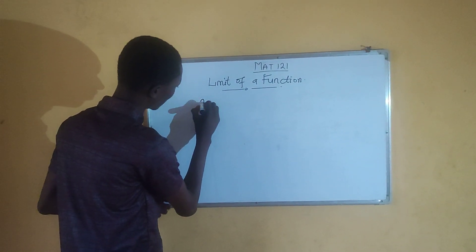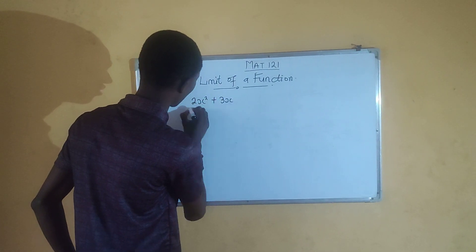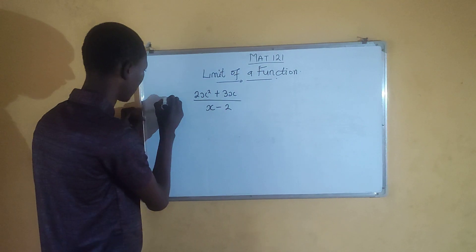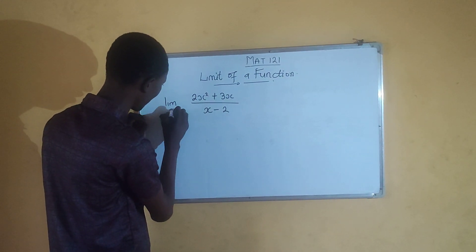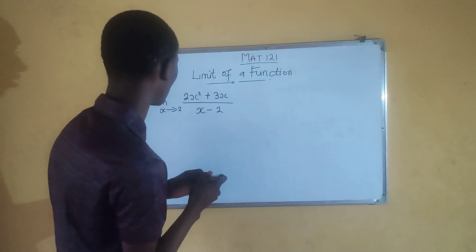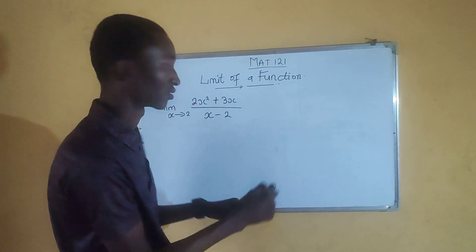Function f of x equals 2x squared plus 3x, everything divided by x minus 2, and it tells you to find the limit when x turns to 2. So you notice that when you supply the value of x into this equation,